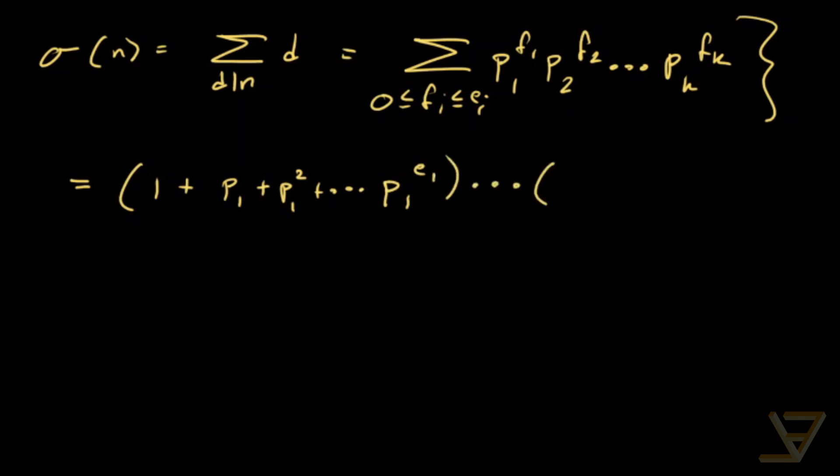This way through the pi until you have 1 plus pk plus pk squared all the way through to pk to the ek.